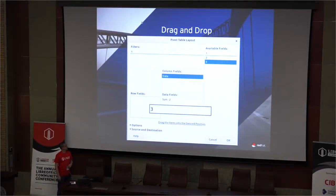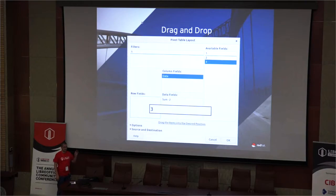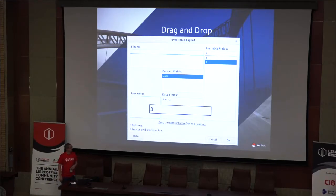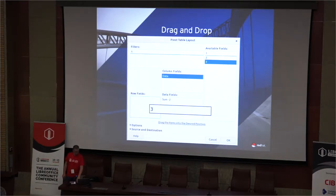This is the pivot table, and for the pivot table you have to support drag and drop between elements. This is an example of that — it works perfectly well. This is a snapshot of actually dragging a field from the available fields to the row fields. It highlights the destination widget and captures the drag. So this is drag and drop working in welded widgets and welded dialogs.